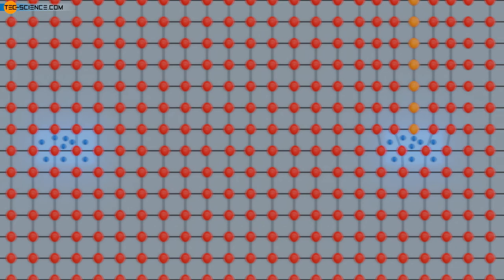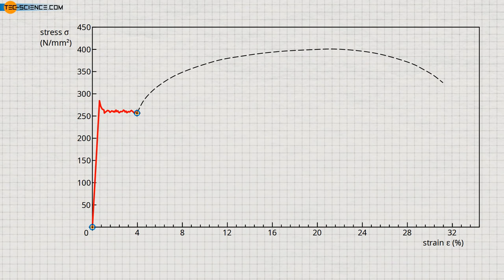Only when the dislocations encounter other obstacles will they be pinned again. This explains the sharp drop in stress at first, and the zigzag-shaped course of the stress-strain curve. Only when the dislocations have moved through the microstructure and are no longer pinned by Cottrell atmospheres does the stress have to be increased again due to strain hardening in order to achieve further elongation.